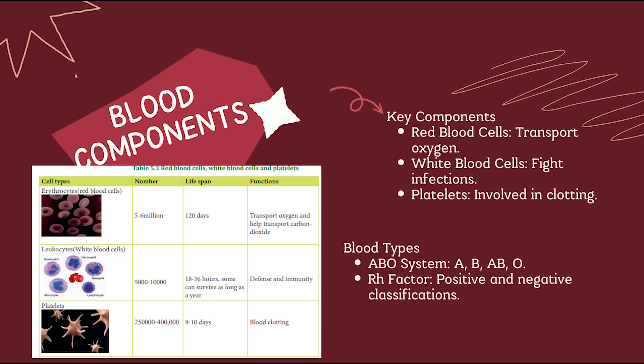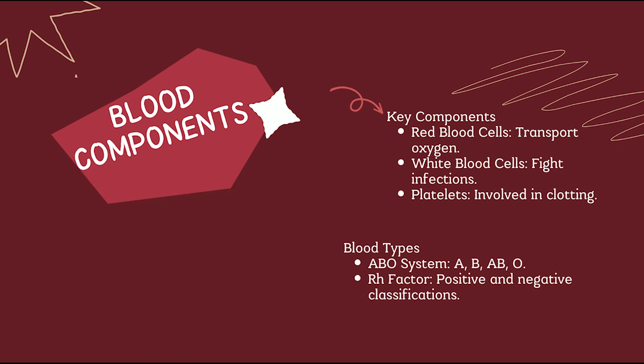Blood is made of red blood cells, white blood cells, and platelets. Red blood cells carry oxygen using hemoglobin. White blood cells defend against pathogens. Platelets help in blood clotting. There are four major blood types: A, B, AB, and O — and each can be positive or negative based on the Rh factor.